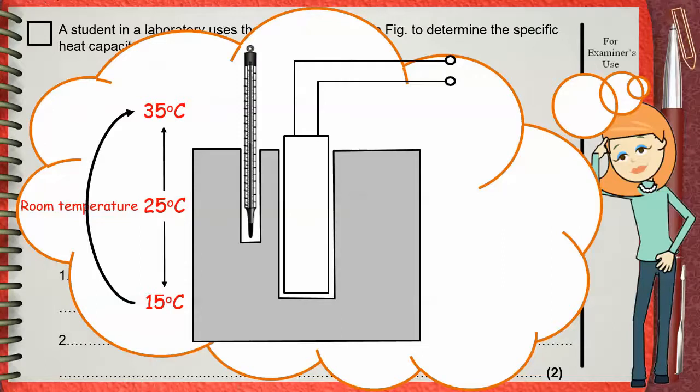Another thing is that you need to add oil to fill the gap between the heater and the block. This will reduce the amount of heat loss from the air around the heater.